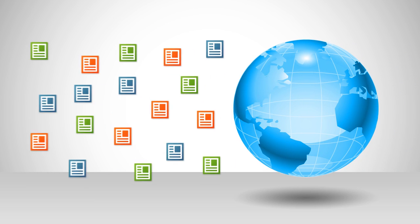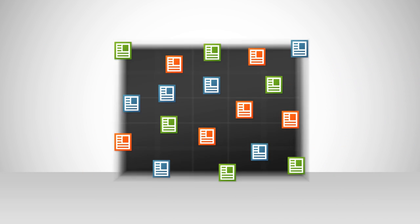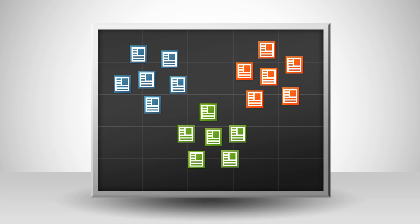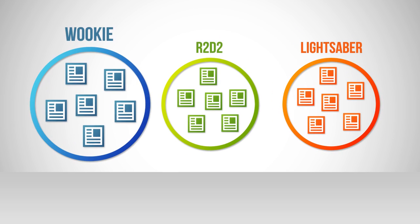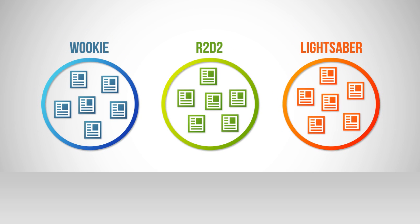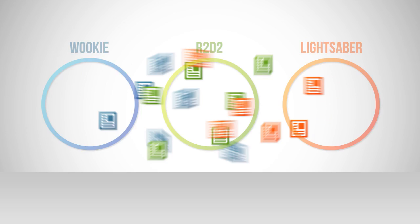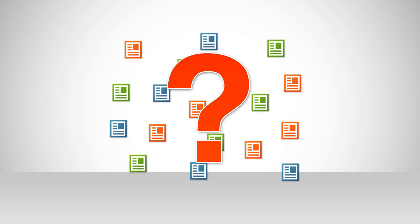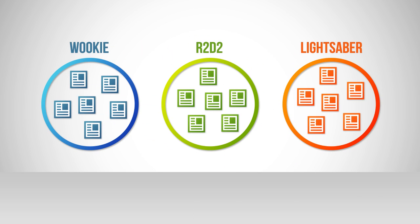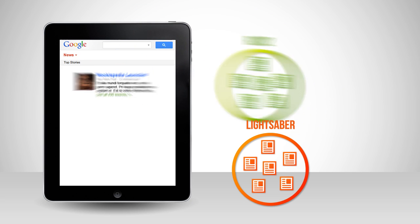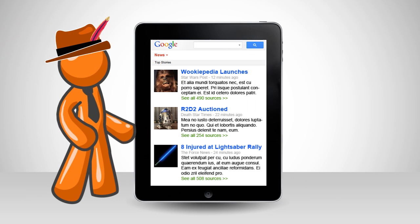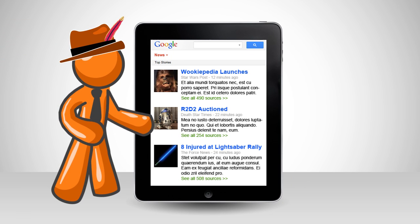Clustering forms groups of similar data based on common characteristics. Unlike classification, clustering does not group data into an existing set of known categories. This is particularly useful when you aren't sure how to organize your data in the first place. Google News uses this powerful technique to make sense of the ever-changing stream of news articles from around the world.